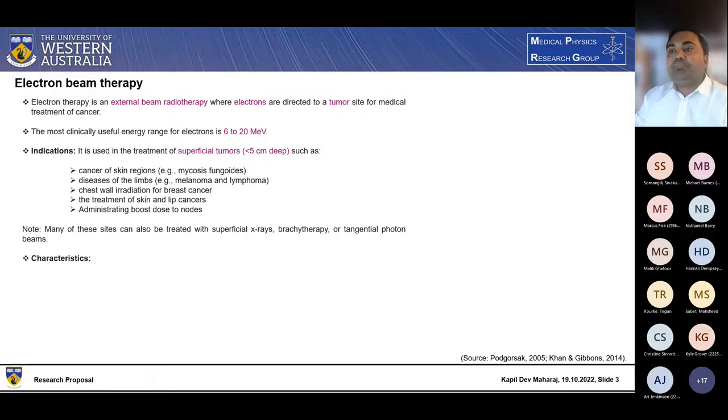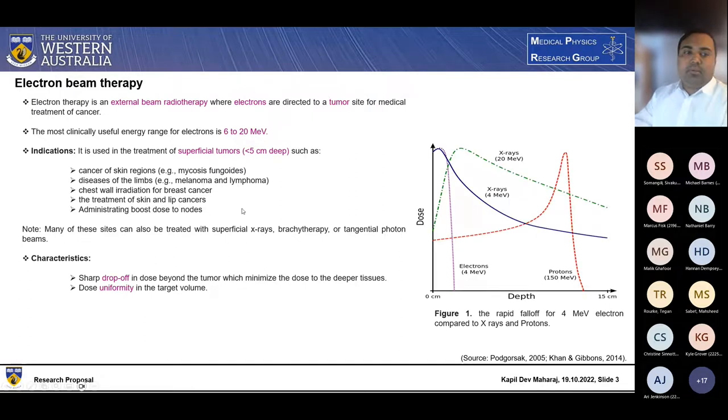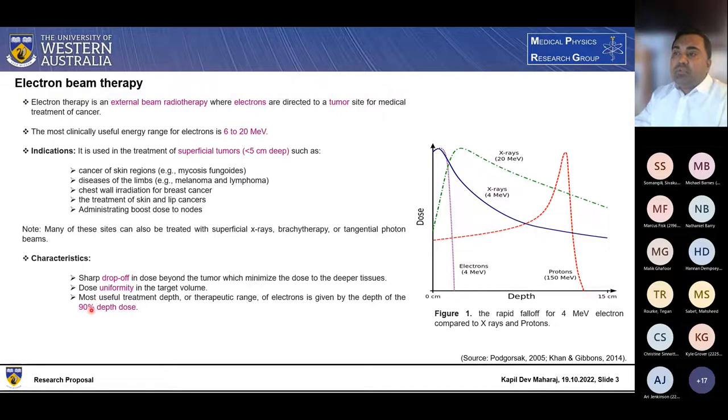So in terms of the key characteristics, the electron beam shows sharp drop-off beyond the tumor, which minimizes the dose to the deepest tissues, shows uniformity in the target volume. So as you can see in the picture on the left hand side, the curve in the green and blue show the percentage depth dose of the photons, which decreases with the depth gradually. However, if you see on the purple curve, which is the percentage depth loss of electron, which drops off very sharply. And another characteristic of the electron beam is the most useful treatment depth, which we use is the 90% depth dose. And it shows a bone sparing effect. So in comparison to the photon beam, it gives less dose to the bone.